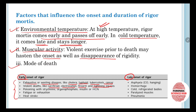Violent deaths like cut throat, electrocution, firearm injuries, and lightning are also going to hasten the rigor mortis process. Additionally, if death has occurred due to poisoning with strychnine, organophosphate, insulin, or HCN, or if the death is due to fatigue, exhaustion, or heat stroke, then also rigor mortis is going to come early.